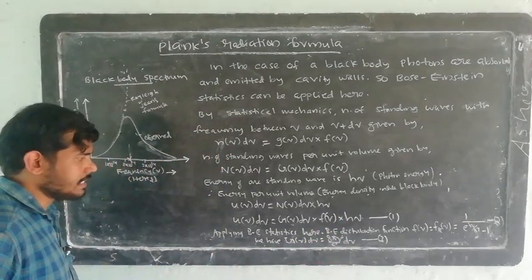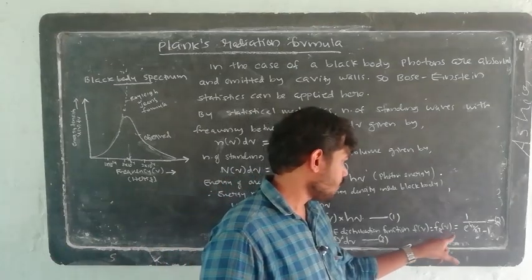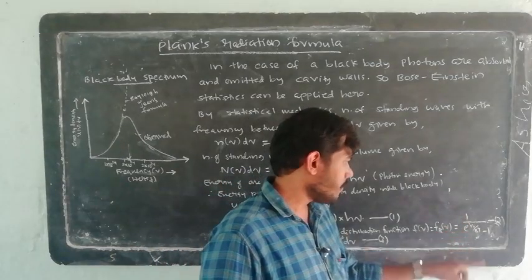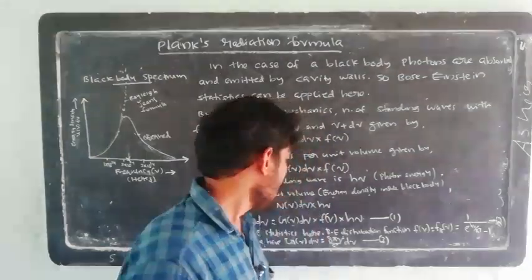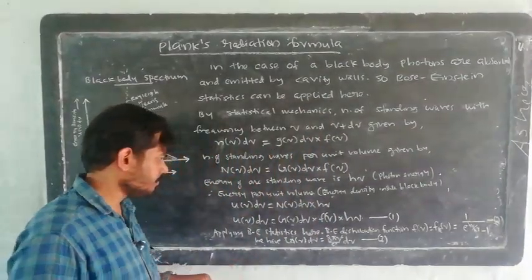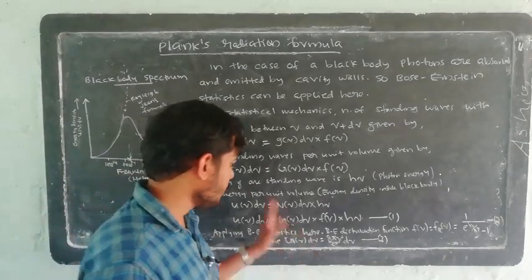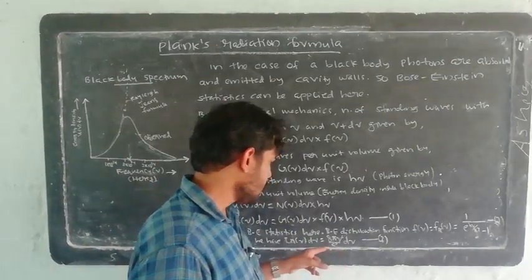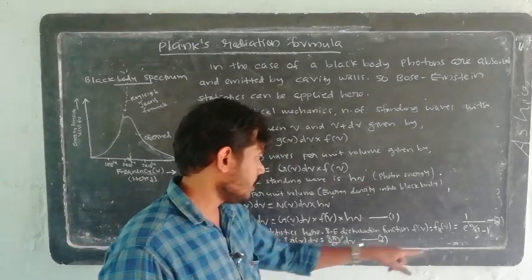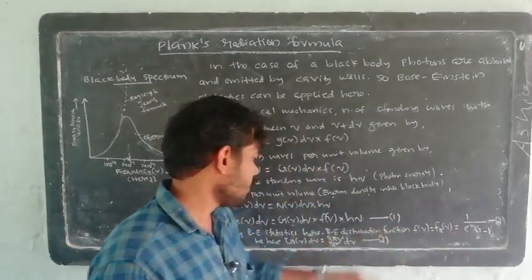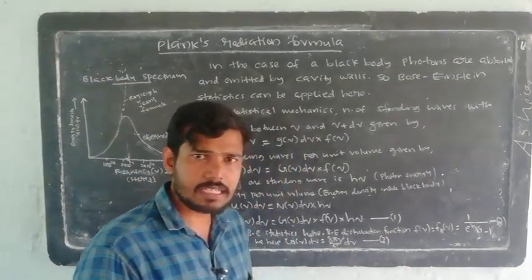Applying Bose-Einstein statistics here, the Bose-Einstein distribution function is: F(ν) = F_BE(ε) = 1 / (e^(hν/kT) − 1). For the value of G(ν)dν, we use Rayleigh's formula: G(ν)dν = 8πν²/c³ · dν. Then substituting equations 2 and 3 into equation 1, we obtain the spectral energy density.